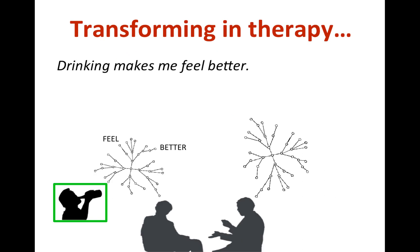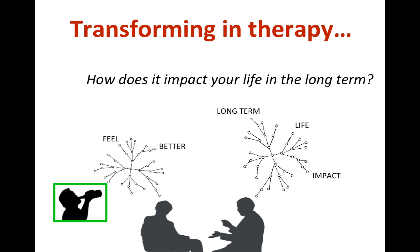Here is an example of transformation in therapy. A client might see drinking as something that makes him feel better — in his network, drinking alcohol and feeling better are in a conditional relation, one leads to the other, and so drinking is seen as something positive. But if the therapist asks the client about the long-term effects of drinking alcohol, it might transform the function of drinking. Now drinking is something that damages the client's health. The therapist used language to influence the way the client responds to drinking alcohol.